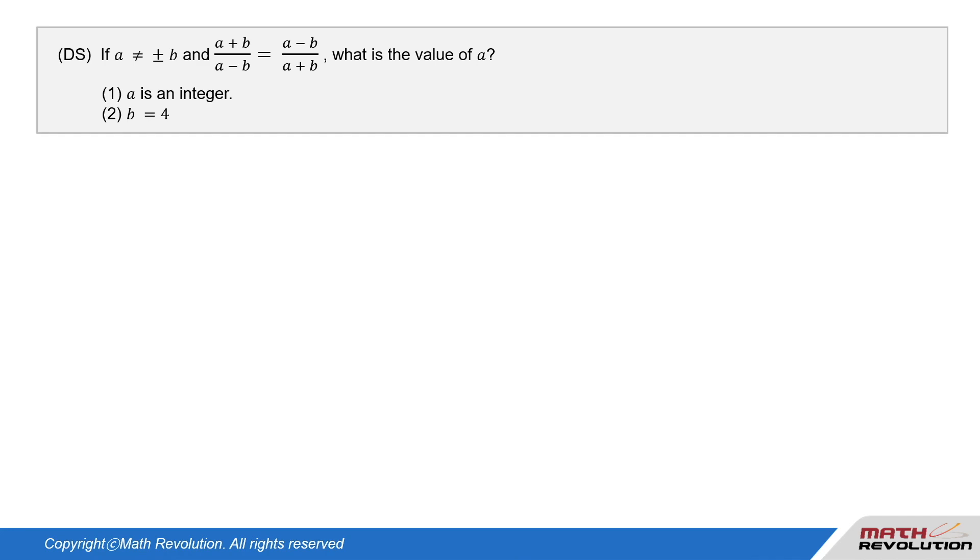If a does not equal plus or minus b, and a plus b over a minus b equals a minus b over a plus b, what is the value of a? Condition 1: a is an integer. Condition 2: b equals 4.